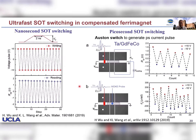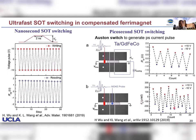We also used 100 femtosecond laser pulses onto an Auston switch to create picosecond current pulses, then read the magnetization in a DC manner. We show that these femtosecond or terahertz-type pulses can switch the ferrimagnet, which we detect from the Hall resistance signal and also from circular polarized light by magneto-optical Kerr effect.